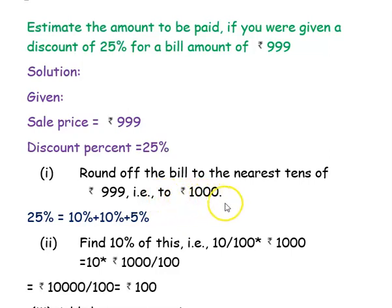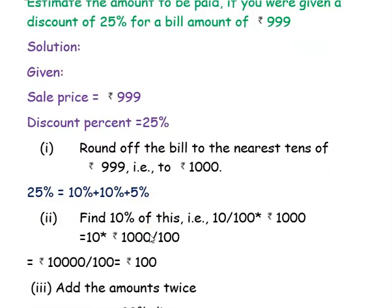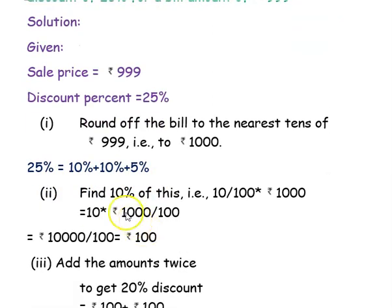Next, the discount percent of 25 percent is split into 10 percent plus 10 percent plus 5 percent. First, find the discount amount for 10 percent: 10 percent means 10 into 1 by 100 into the amount of rupees 1000.